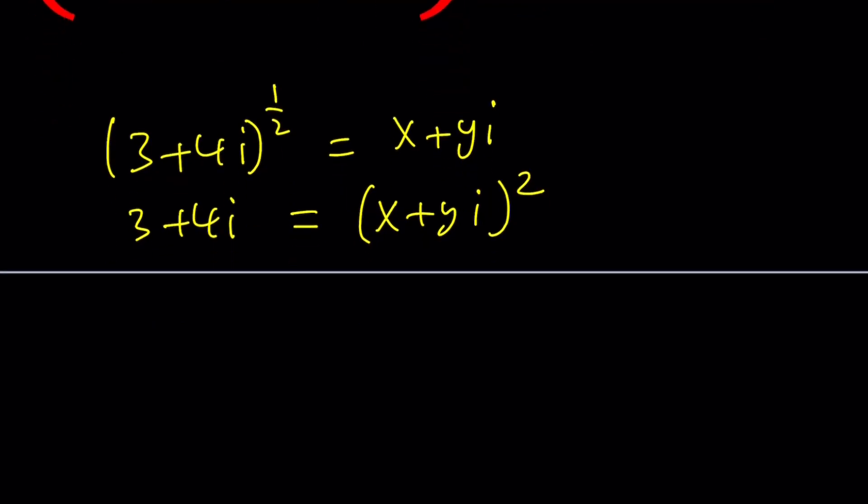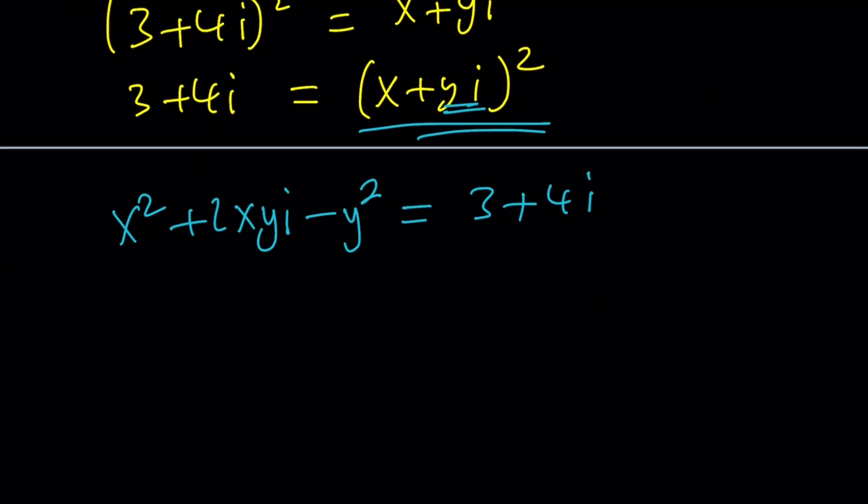Now let's go ahead and expand this. That's going to be x squared plus 2xyi. Be careful here. If you square yi, you get y squared i squared, but i squared is what? Negative 1. So this is minus y squared. And that's equal to 3 plus 4i. Now let's go ahead and put the real parts together.